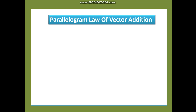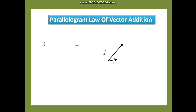Now let us see the parallelogram law of vector addition. Here, instead of placing the tail of one vector at the head of the other, we place both tails together and complete a parallelogram. The opposite sides are parallel and equal in magnitude. We then draw the diagonal from the point where A and B meet — that diagonal represents the resultant vector R = A + B.